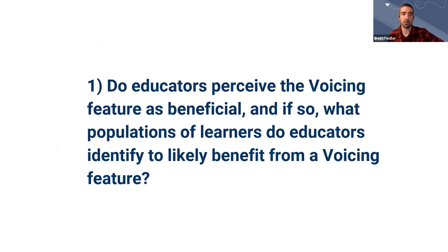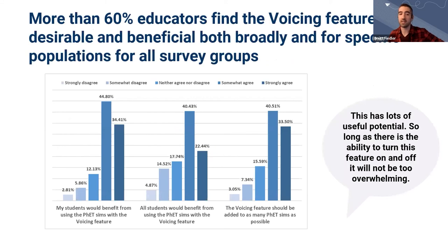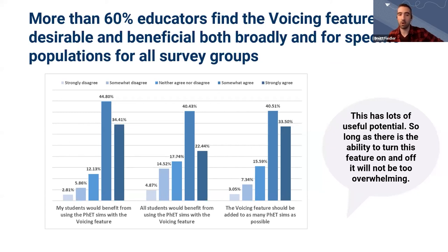The good news is that more than 60% of educators found the voicing features desirable and beneficial both broadly and for specific populations, across all survey groups. Three distributions showed modes at 'somewhat agree' with high frequency for 'strongly agree' for: 'My students would benefit,' 'All students would benefit,' and 'The voicing feature should be added to as many PhET sims as possible.' Interestingly, 'all students' was consistently rated lower than 'my students' — something to unpack. Educators noted the role of voicing in conceptual scaffolding with both positive and negative sentiments: positively supporting initial interaction and exploration, but possibly removing student agency from discovering and reasoning through scientific content themselves.